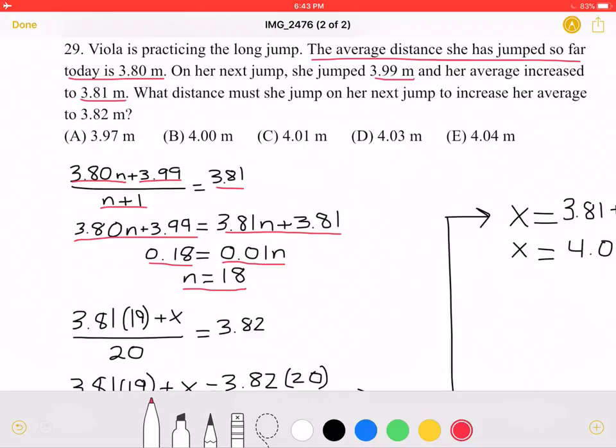We want to know what her next jump must be so that her average increases to 3.82. We take the total distance she has done so far, which would be 3.81 times 19 because her average for her 19 jumps—she had 18, but then we must add 1 because of the 3.99 jump—so now she has done a total of 19 jumps.